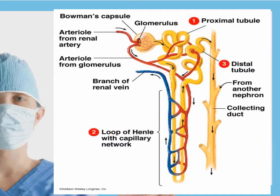Here is the glomerulus, and these are the tubules: the proximal convoluted, the distal convoluted, and the collecting duct, in addition to the loop of Henle.